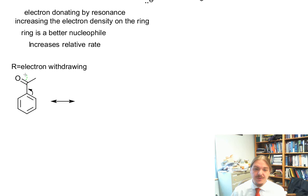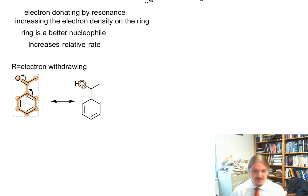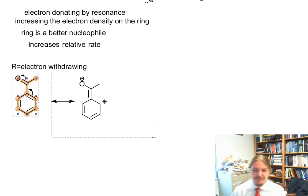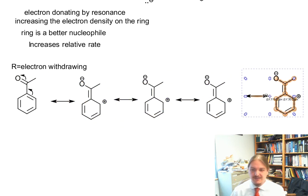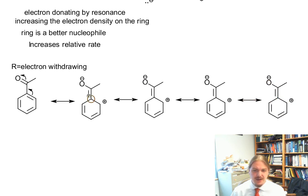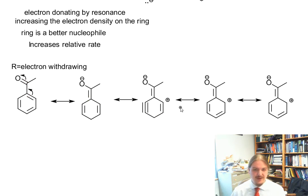Electron withdrawing groups withdraw electron density from the aromatic ring. Our ketone here does it by resonance; there are some that will do it by induction — that's something to talk about at another time. Just as I did for the electron donating case, I want to draw out all five resonance structures.